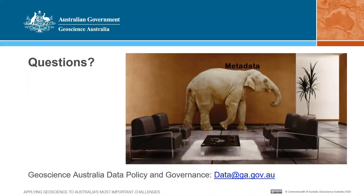How broad a spectrum of data is included in science data? It does not include human resources or financial information. We are focused on the science produced by Geoscience Australia — the data collected, products produced, publications, portals, software in terms of GitHub repositories, and web services used to deliver data. We tend to focus on the business of Geoscience Australia as opposed to corporate-type information. Corporate information is held in its own systems and our content management system internally.